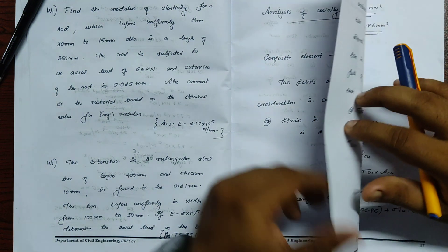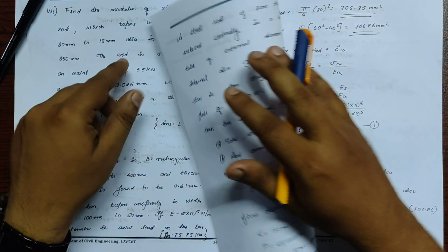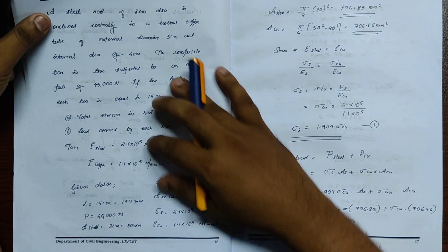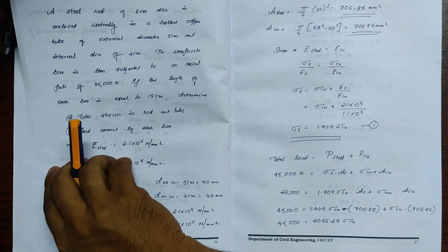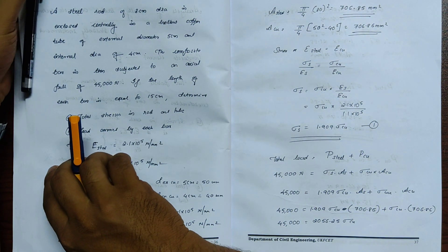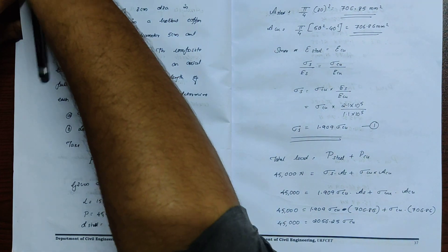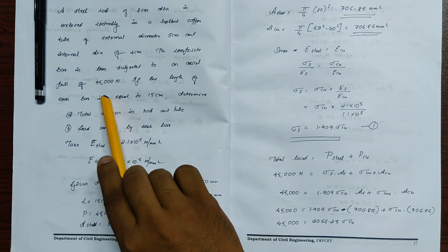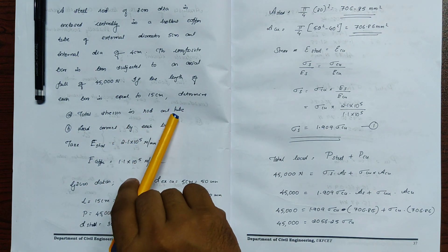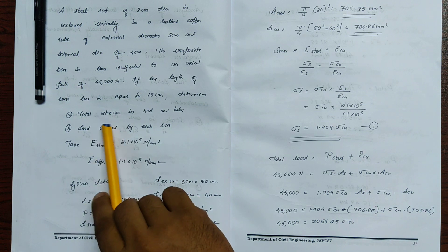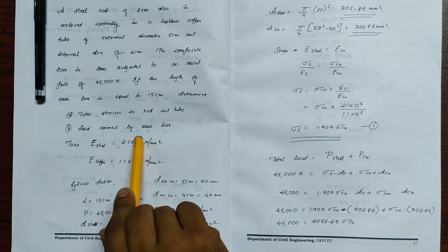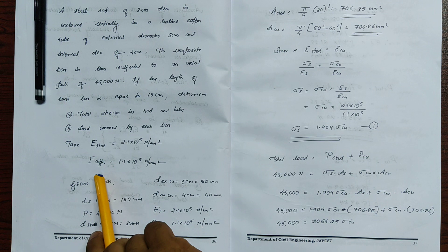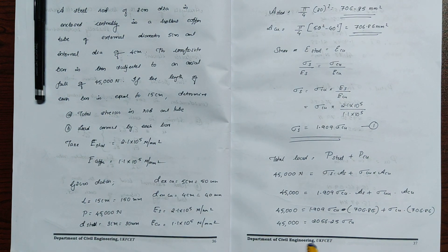The composite bar is subjected to an axial pull of 45,000 Newtons. The length of the bar is equal to 15 centimeters. The modulus of elasticity of steel is 2.1 × 10⁵ N/m² and modulus of elasticity of copper is 1.1 × 10⁵ N/m². Determine the total stress in the rod and load carried by each bar.